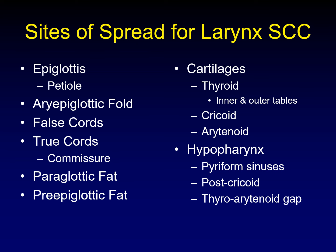We'll also discuss the cartilages, where we want to distinguish not just between the three major cartilages — thyroid, cricoid, and arytenoid — but also between the inner and outer tables of the thyroid cartilage because it makes a difference in staging. Secondarily, we'll talk about primaries in the hypopharynx and how they can secondarily affect the larynx, or vice versa, primaries in the larynx secondarily affecting the hypopharynx.